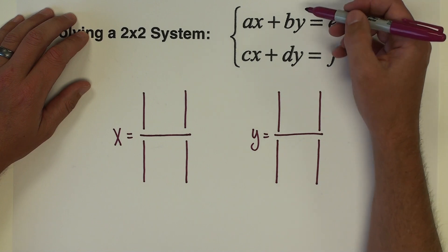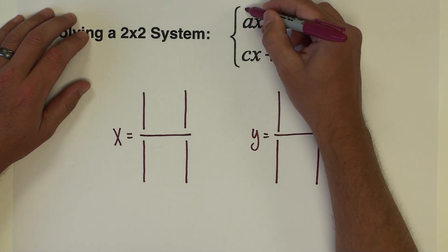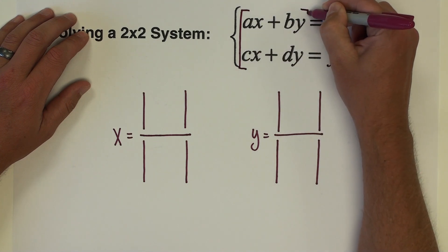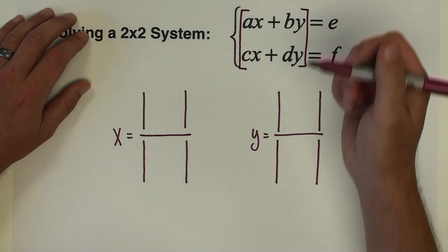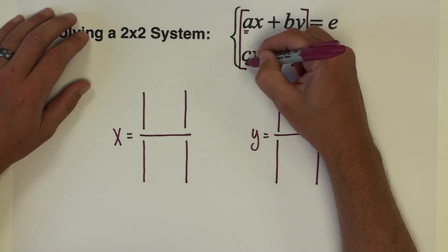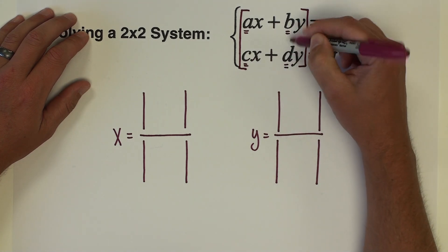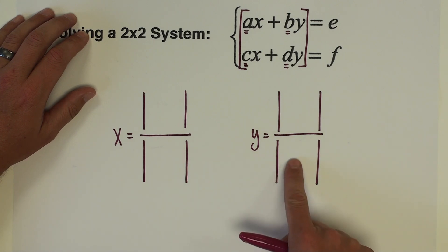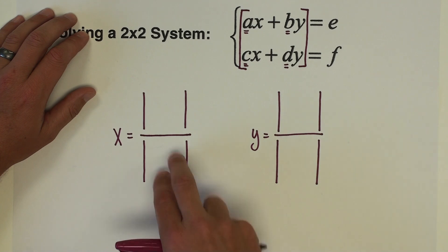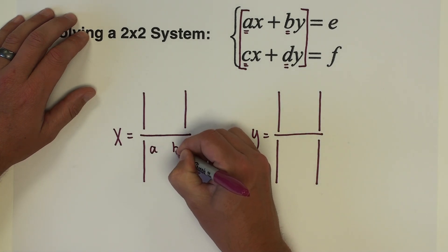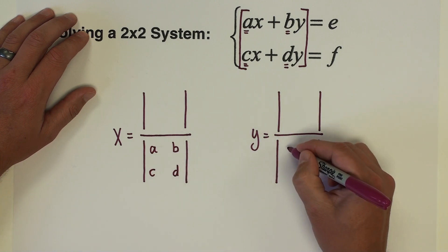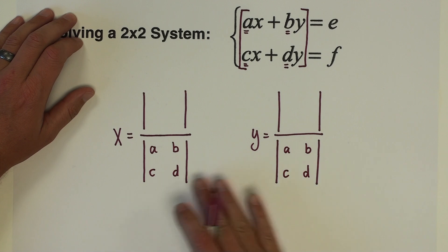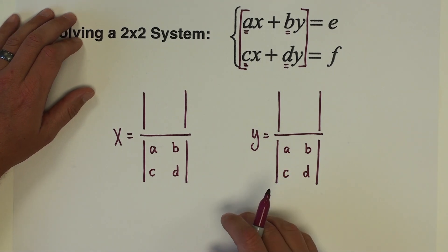When you look at this system, it's natural to see the way it's set up — with x and y on the same side — as the makings of a two by two matrix. I'm going to take the x's and y's out and just use the coefficients. Those four numbers make up what I call a coefficient matrix, and the denominator of both x and y simply uses this coefficient matrix: a, b, c, d.